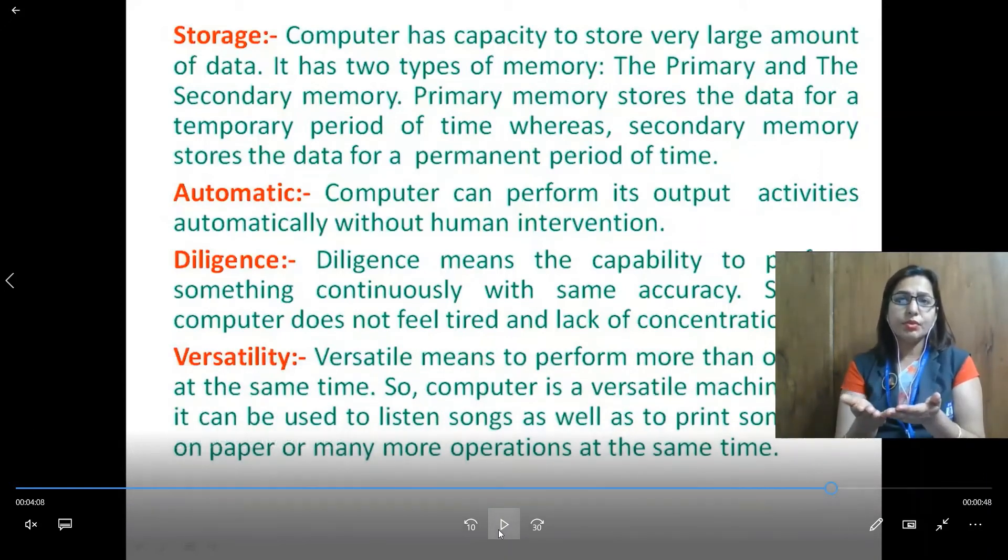Computer has capacity to store very large amount of data. It has two types of memory: primary and secondary. Primary memory stores the data temporarily, whereas secondary memory stores the data permanently.